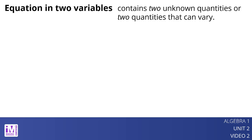An equation in two variables contains two unknown quantities, or two quantities that vary. A solution to this type of equation is a pair of numbers that makes the equation true.